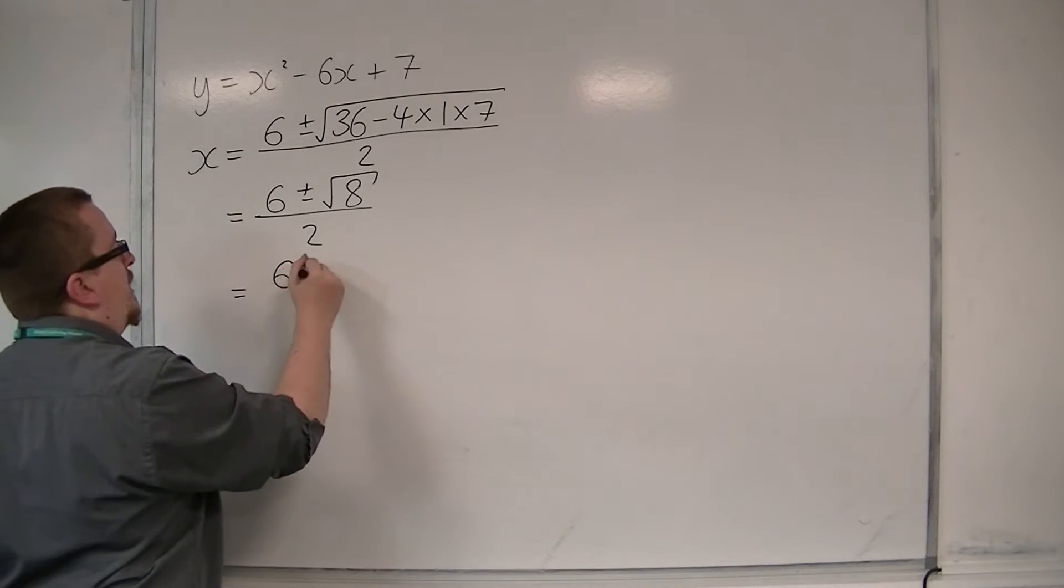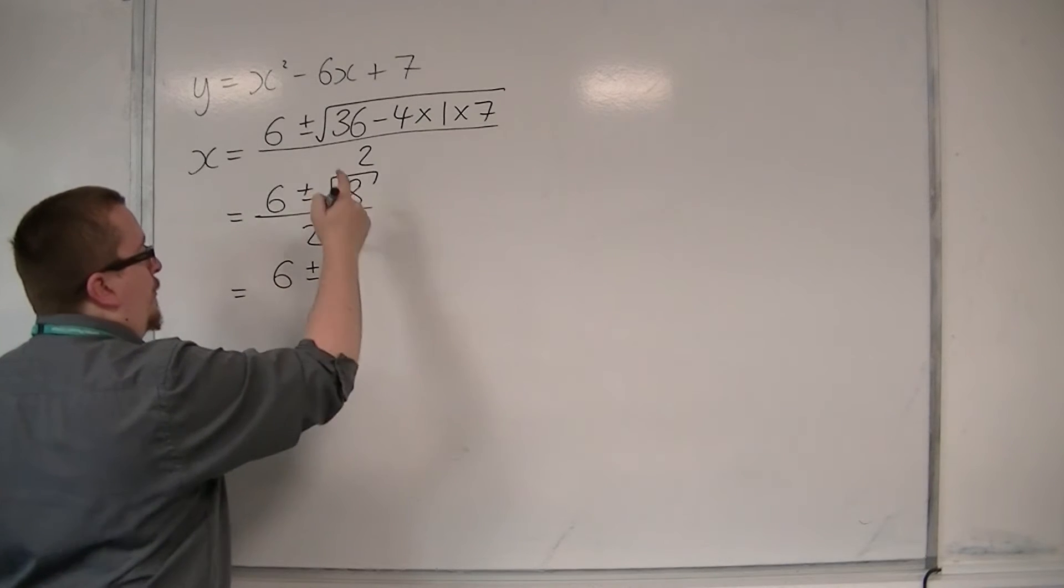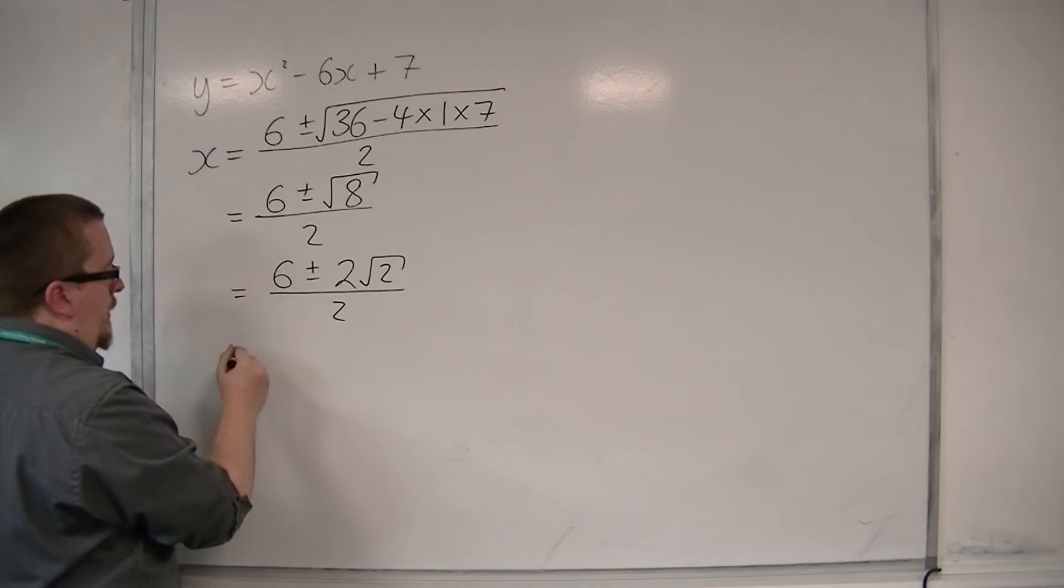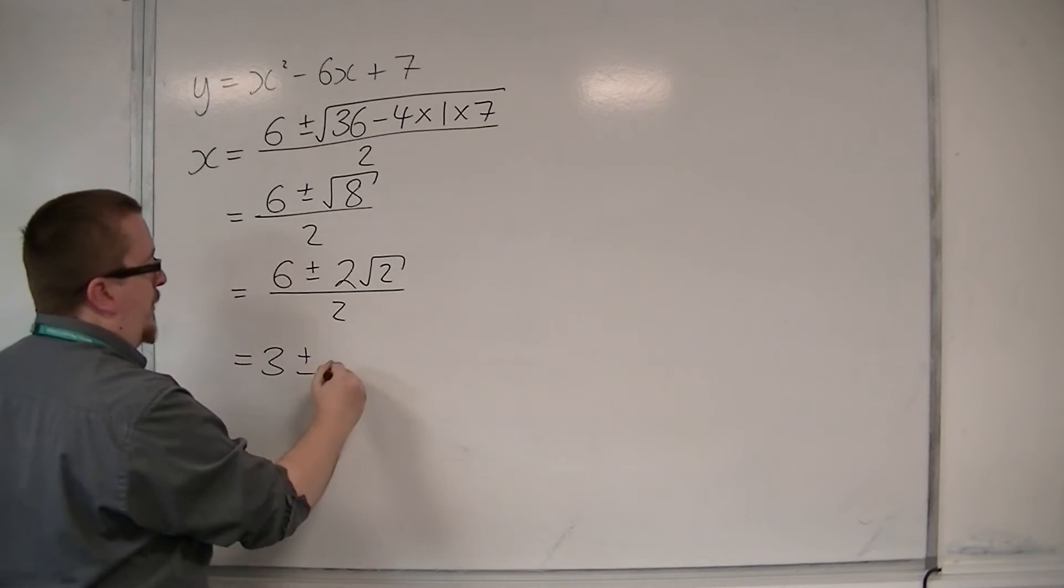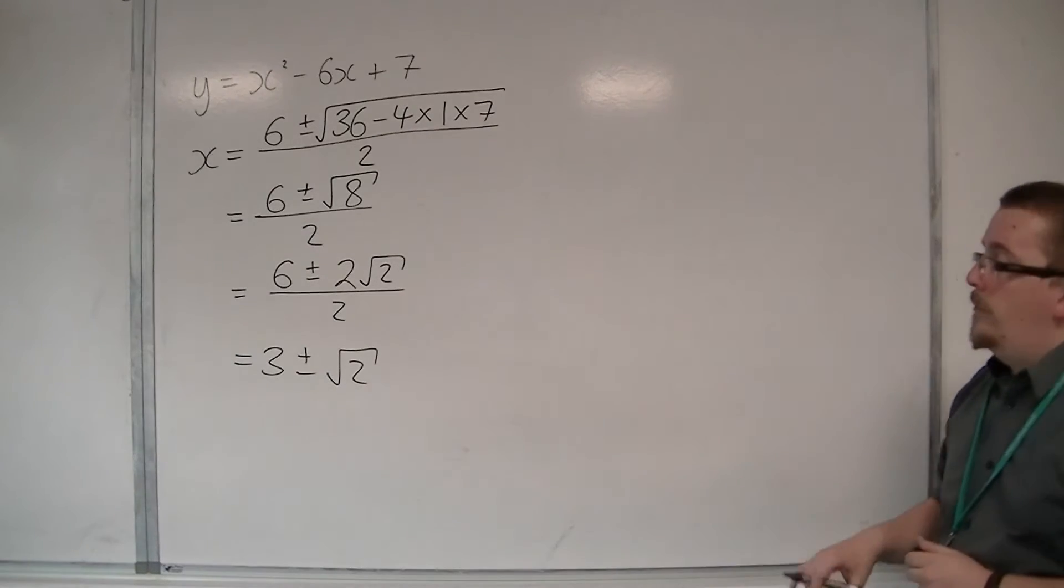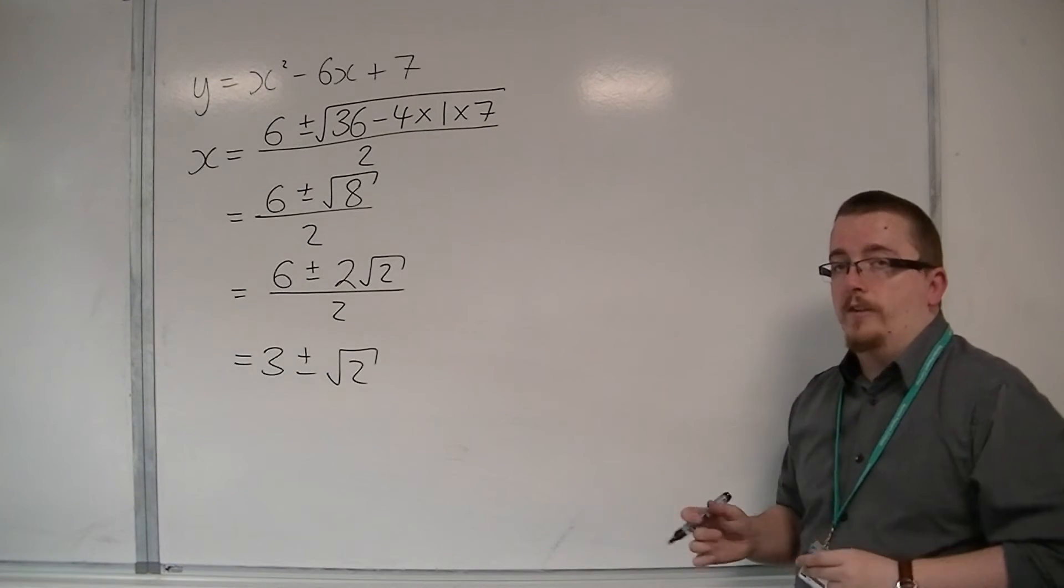Now the square root of 8 can be simplified to 2 root 2. So that's all over 2. So this simplifies to 3 plus or minus root 2. So the two solutions are 3 plus root 2 and 3 minus root 2.